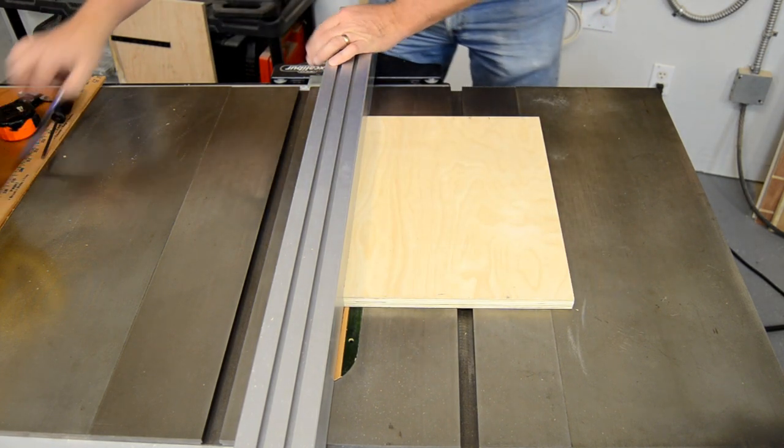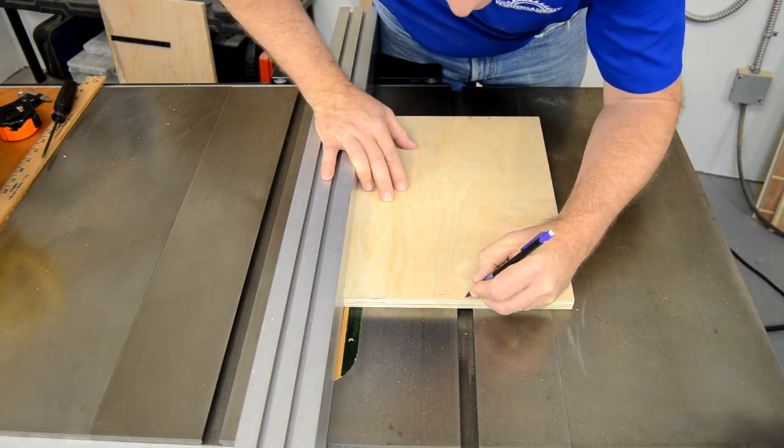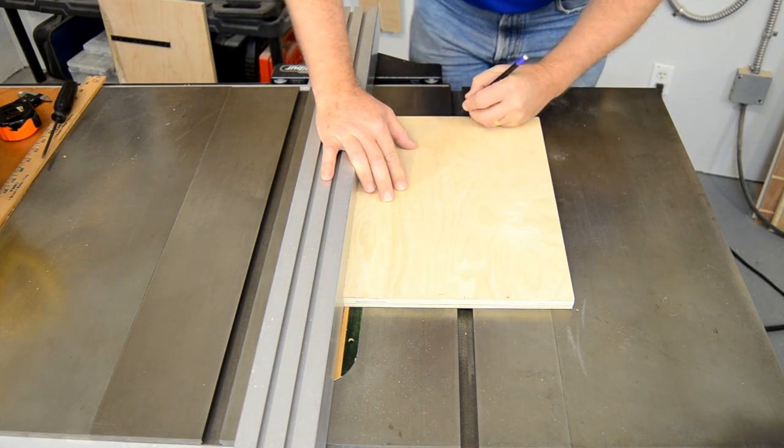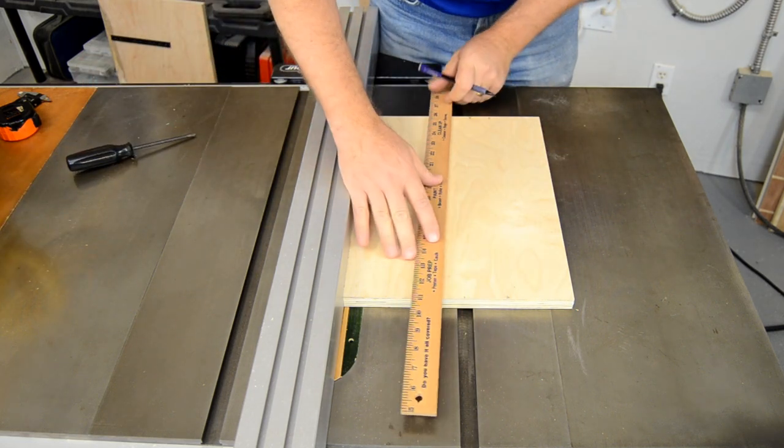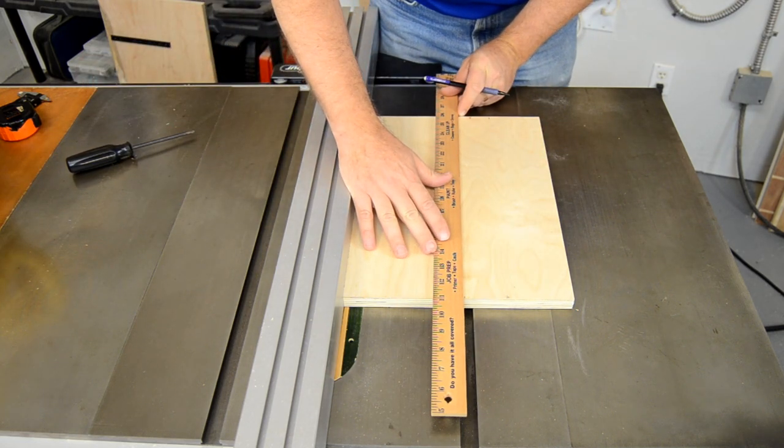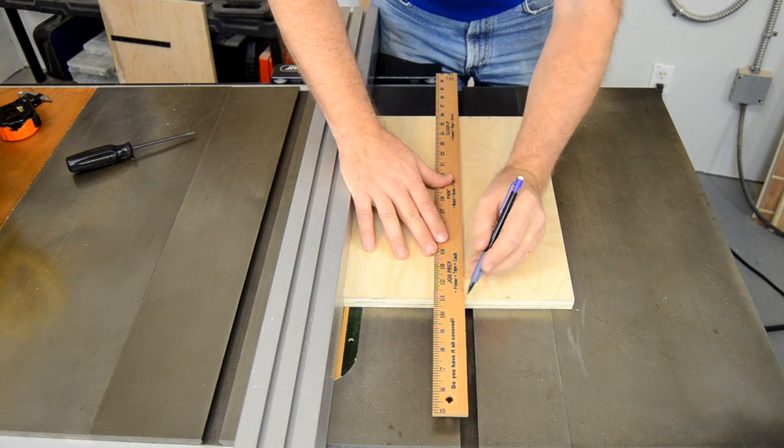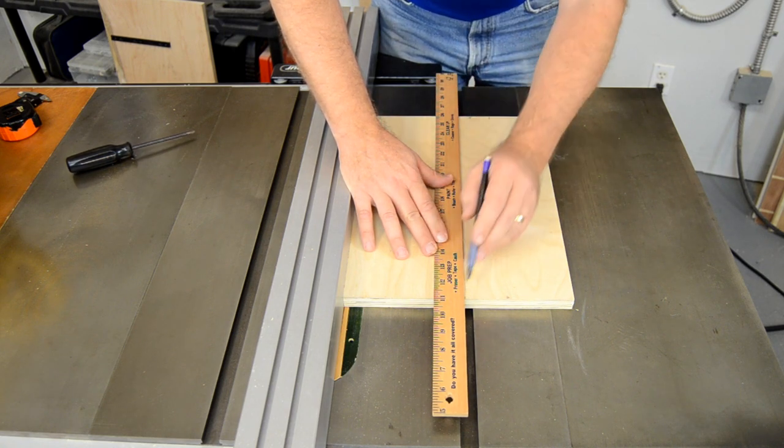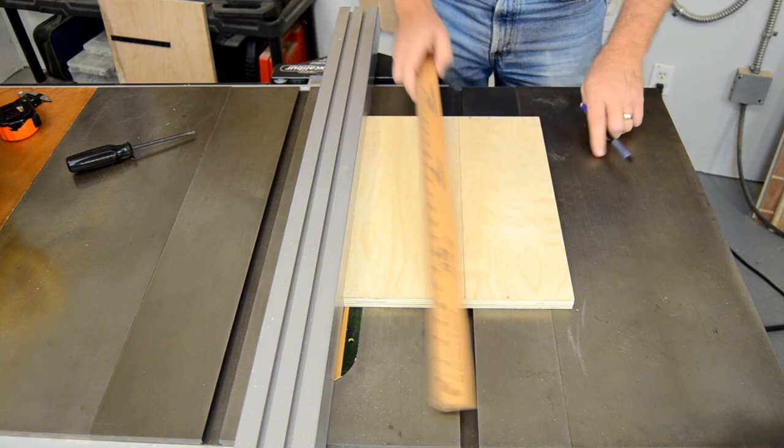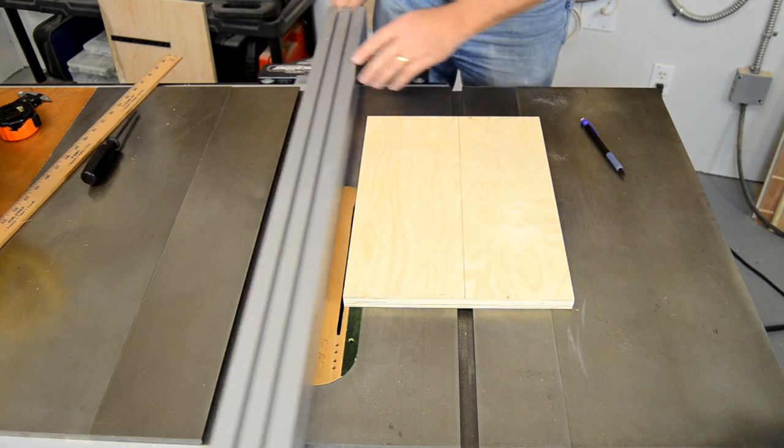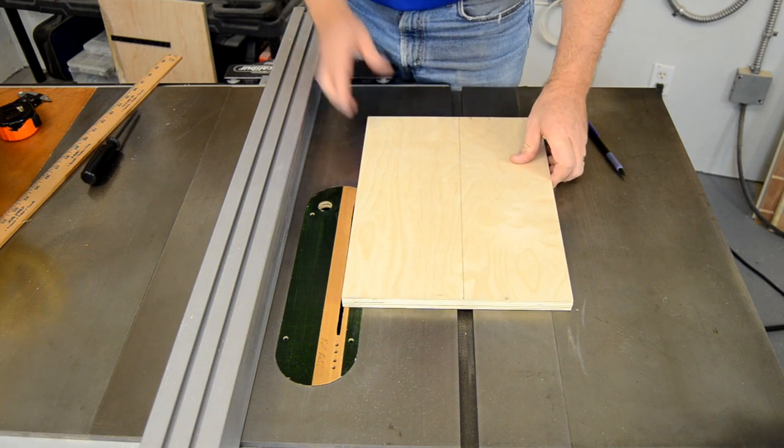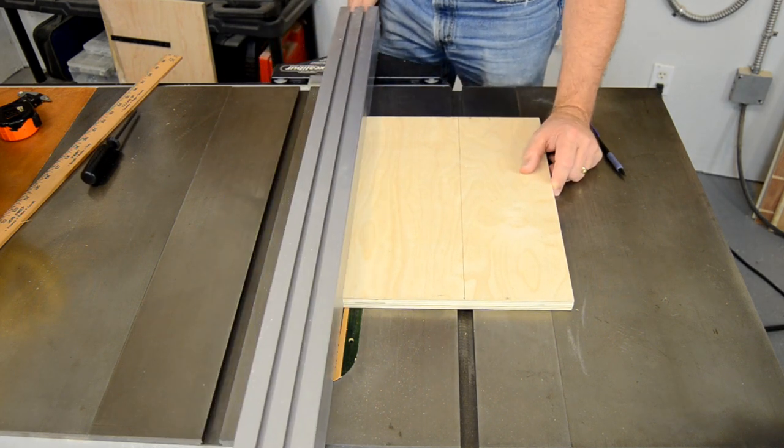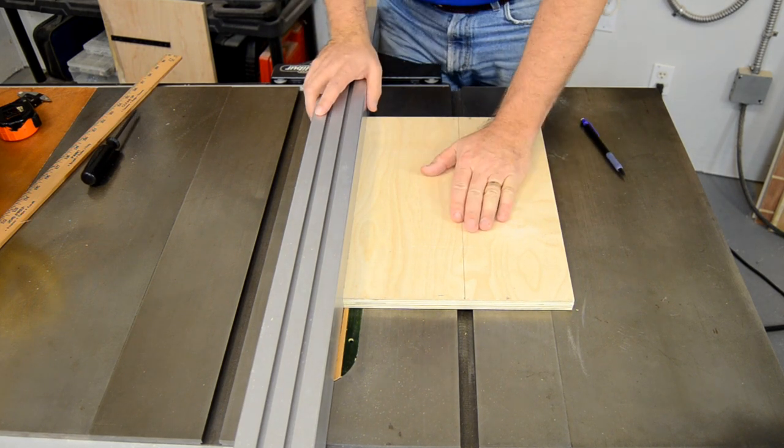Then once again we mark the center line front and back of the miter gauge, just visually. Strike the line same as before—we're just doing one instead of two here. Then I can drill the holes, mount the zero play, get it set into position, and once again square it up with the fence. That's going to position my jig exactly the way I want it.